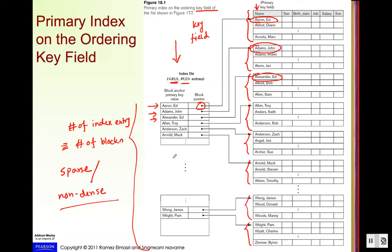Welcome back. As we are talking about primary indexing, indexing is a secondary access structure — a secondary access path to find a record. Without indexing, when we search for a record we search in the original data file. But with indexing, we find the appropriate index entry, and from that index entry we find the block where the record we are looking for is stored.